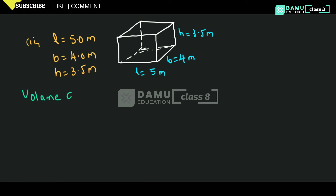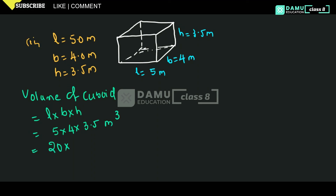So volume of cuboid is equal to length into breadth into height. Length is 5, breadth is 4, height is 3.5 — all in meters. So 5 × 4 = 20, and 20 × 3.5 = 70 meter cube. That is the volume for this problem.